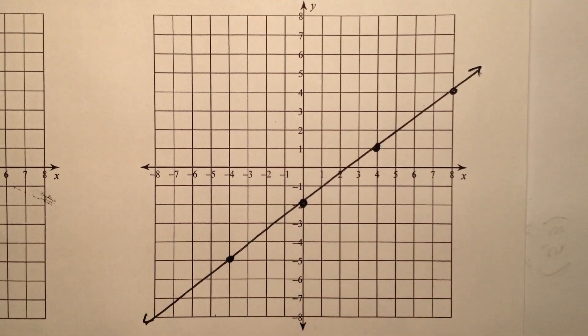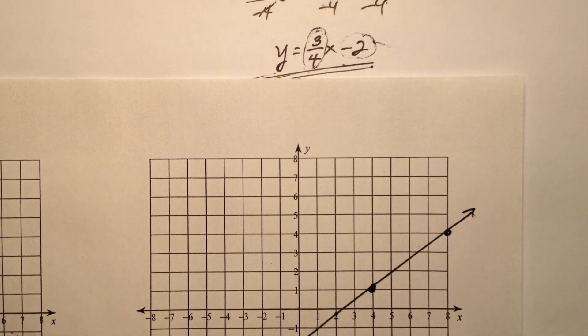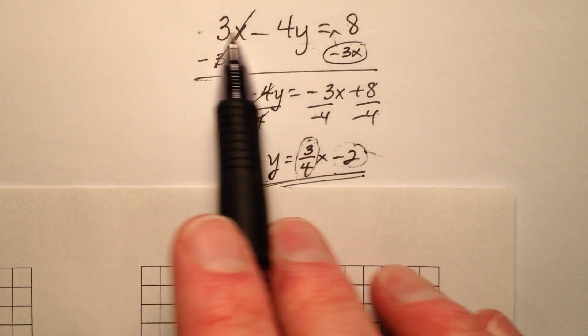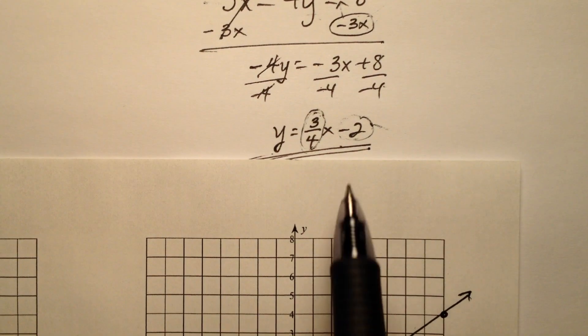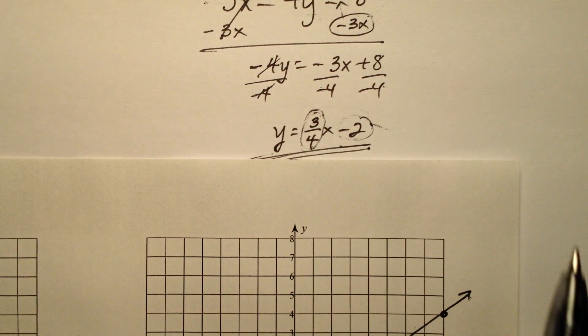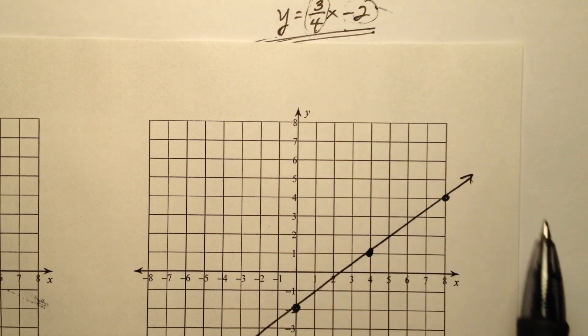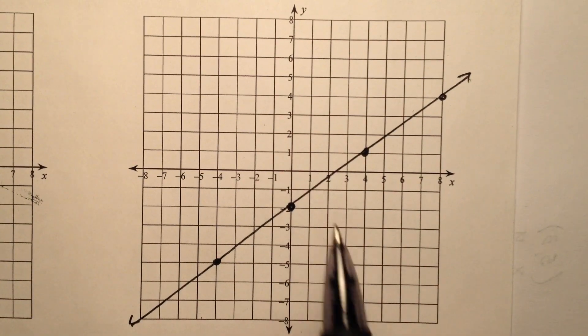So I have now graphed the equation. It was initially given to us in standard form, 3x minus 4y equals 8. I went ahead and changed that to slope-intercept form, and then I used its y-intercept and its slope to go ahead and graph this line.